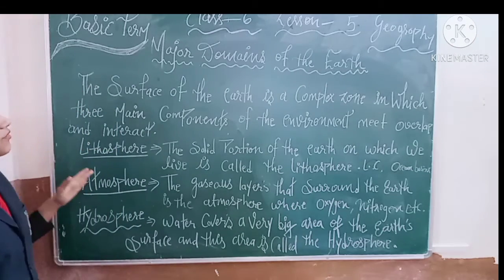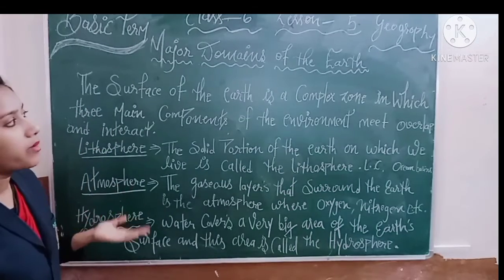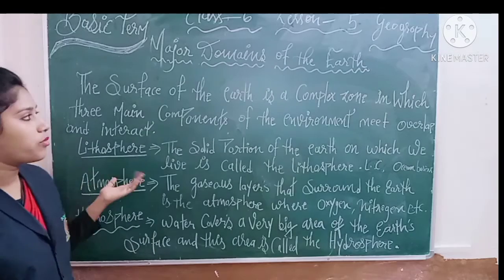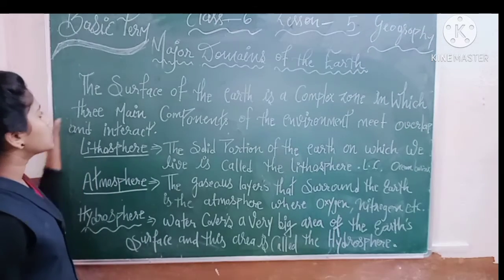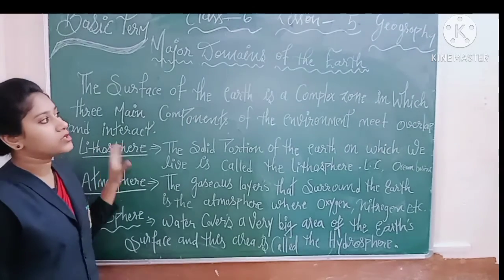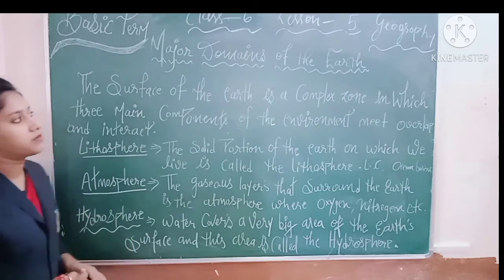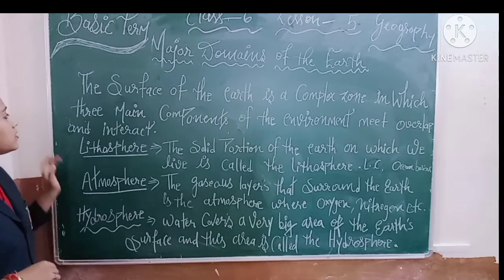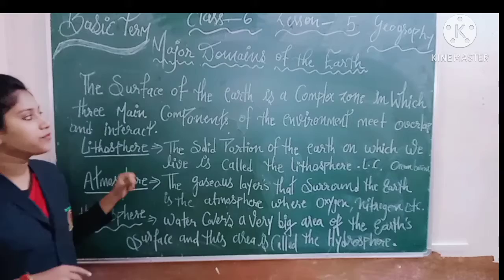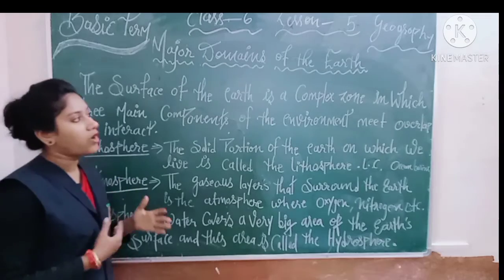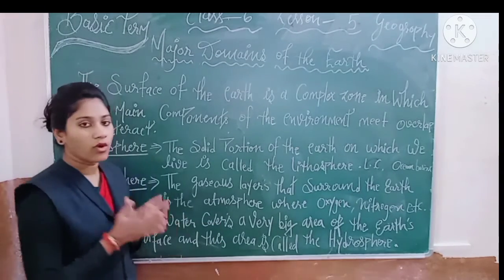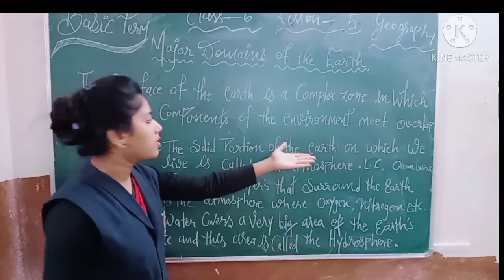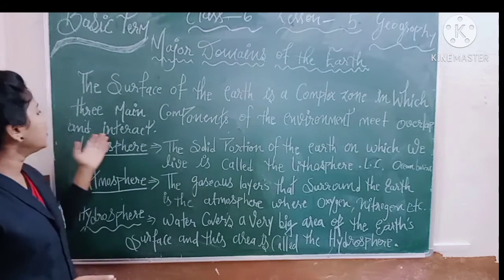The Earth is a complex zone in which there are three main components. The surface is the Earth's complex zone, and it has three main components which make our environment better. These components overlap and interact.